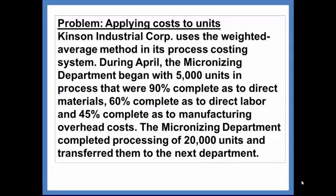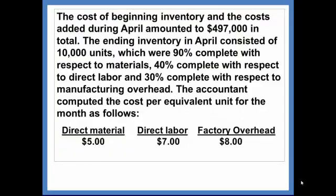Kinzen Industrial Corporation uses the weighted average method in its process costing system. During April, the micronizing department began with 5,000 units in process — 90% complete as to direct materials, 60% complete as to direct labor, and 45% complete as to manufacturing overhead costs. The micronizing department completed processing of 20,000 units and transferred them to the next department. The cost of beginning inventory and the cost added during April amounted to $497,000 in total.